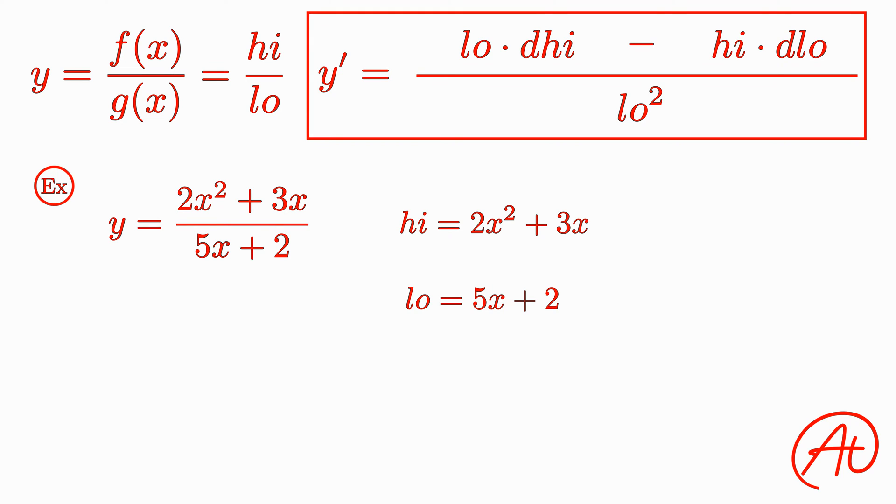Taking the derivative of each of these separately, the power rule tells us that d high is 4x plus 3, and d low is 5.